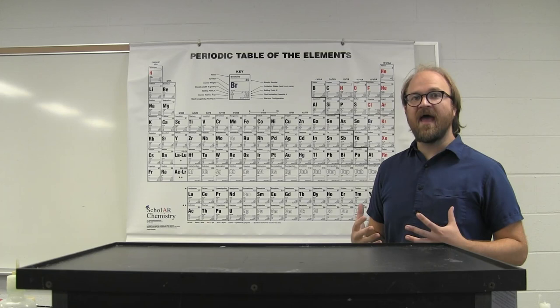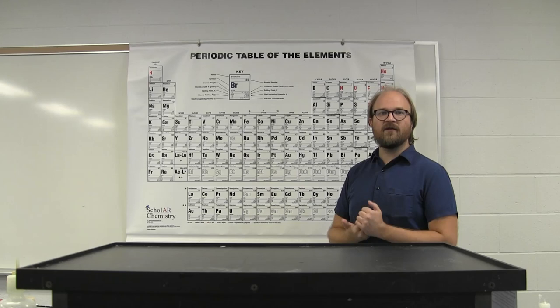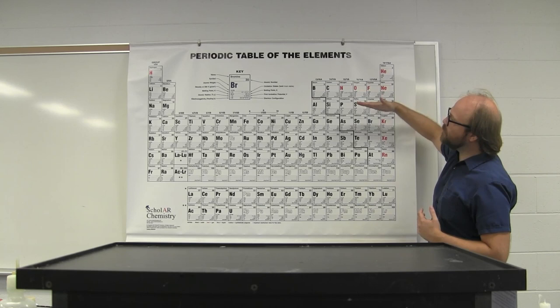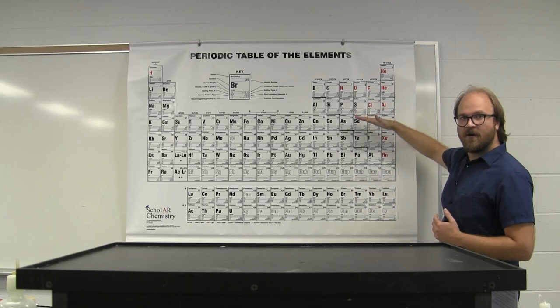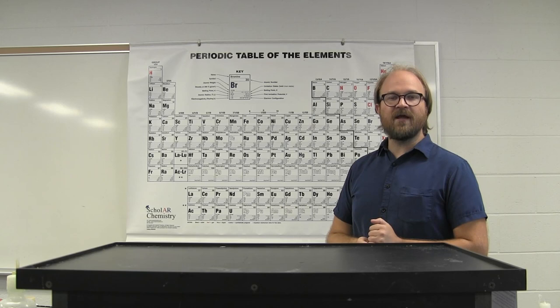Electron configurations are a way to show the unique pattern of energy that the electrons in an individual element would have. These electron configurations are based on position in the periodic table. The first number in an electron configuration is the energy level of the outermost electrons, which is based on which period the element falls in. The farther down the periodic table, the higher the energy those electrons have.